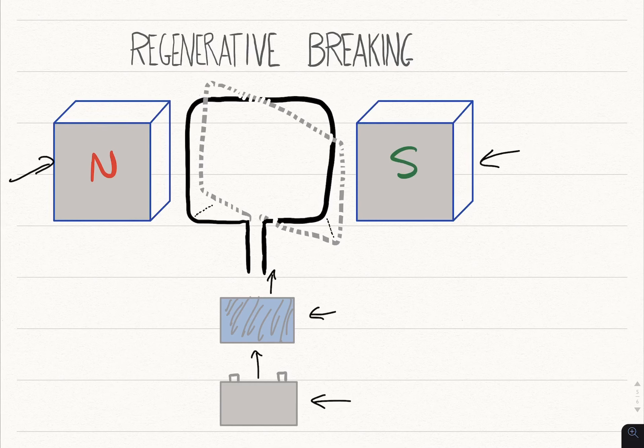Now when you're not using the battery to power the generator to move this coil to move the wheels, it's going to be the opposite effect. So when these wheels are turning, you're going to induce a current on this coil.